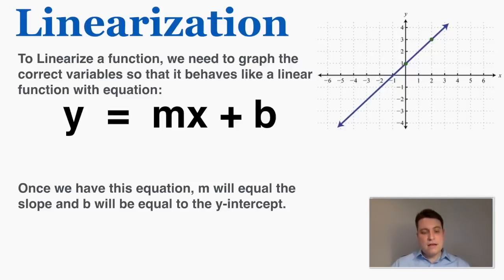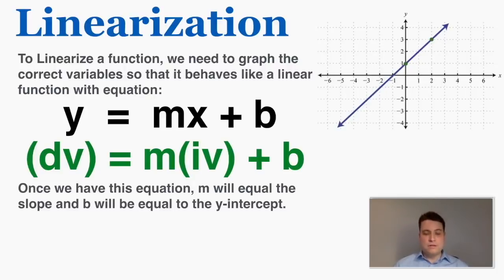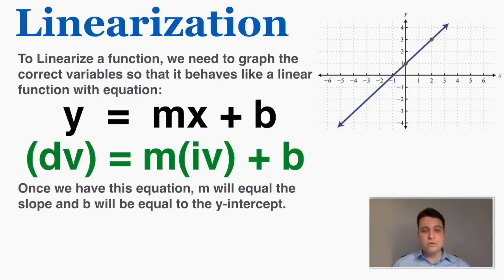What this means is that we're going to have to decide on a dependent variable to put on our y-axis and set that equal to some constant m multiplied by the thing that we're graphing on our x-axis — the independent variable — plus the y-intercept, some other constant. Once we have the equation arranged in this way, m will be equal to the slope, b will be equal to the y-intercept, and the function itself will be a straight line.